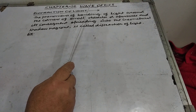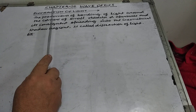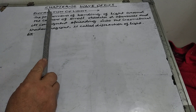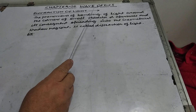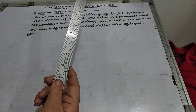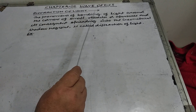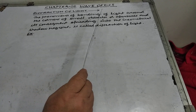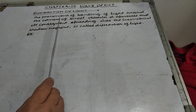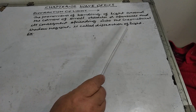Good morning students. Today I am going to start a new topic of chapter number 10, Wave Optics — that is diffraction of light. This is a very important topic after interference. The definition of diffraction of light: the phenomenon of bending of light around the corners of small obstacles or apertures and its consequent spreading into the geometrical shadow regions is called diffraction of light.